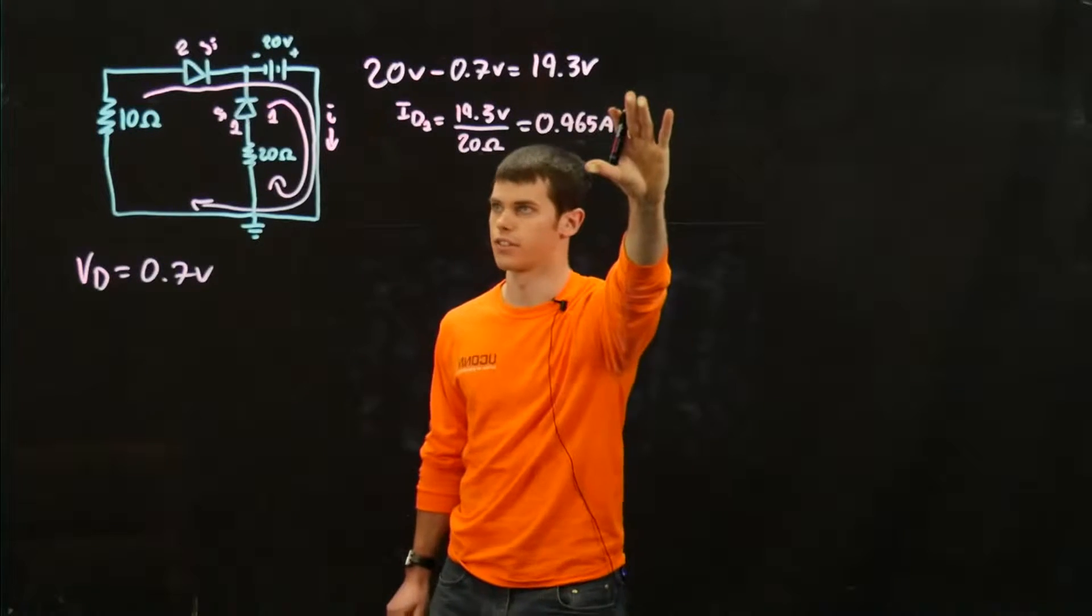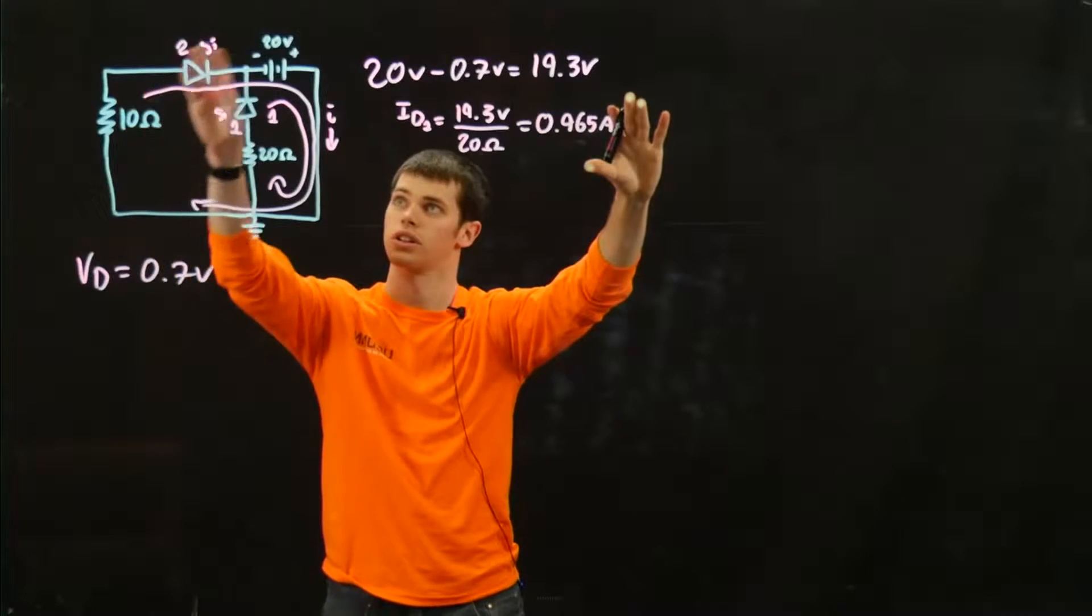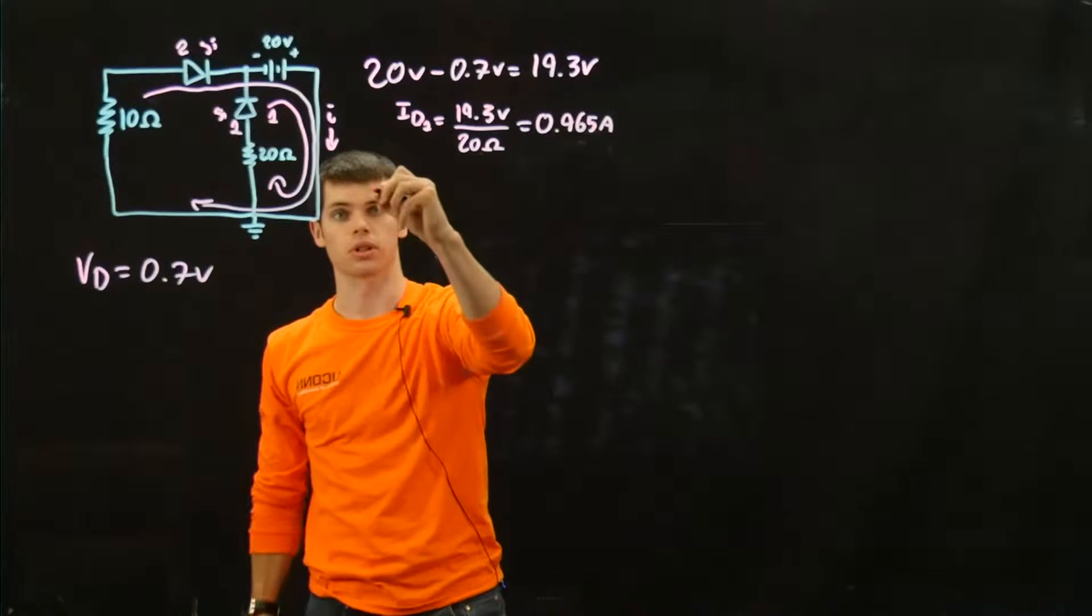Alright, so that's the first diode, we got that down. Now we're going to want to move to the second diode, and we're just going to treat the whole thing, effectively ignoring this for this loop, and same principle is going to apply.